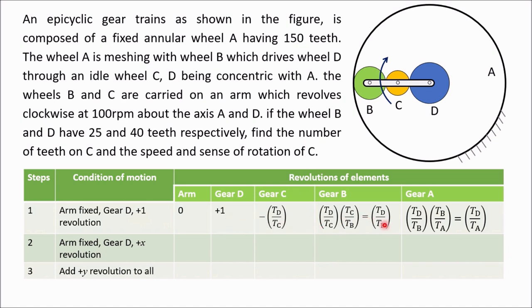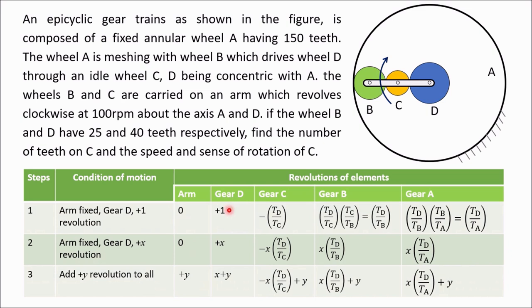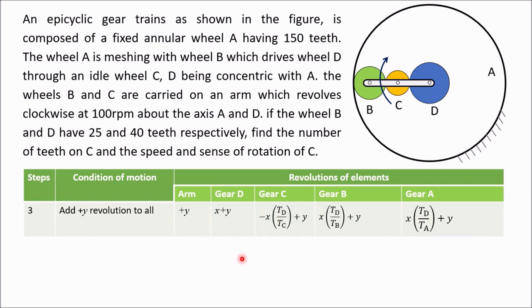Step 2: give gear D plus x rotation — multiply each element of row 1 by x. So we get 0, +x, −(tD/tC)x, +(tD/tB)x, +(tD/tA)x. Step 3: add y revolutions to all elements. So the final row is: arm = y, gear D = x+y, gear C = −(tD/tC)x+y, gear B = (tD/tB)x+y, gear A = (tD/tA)x+y. This last row represents the speed of each gear.